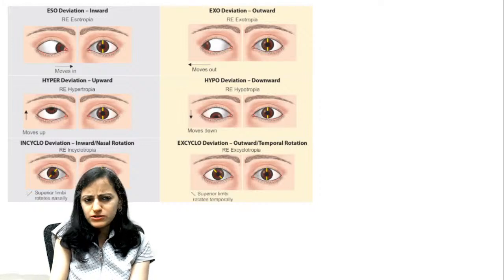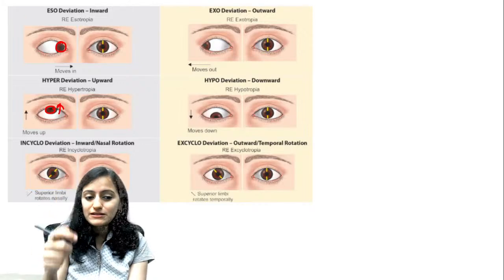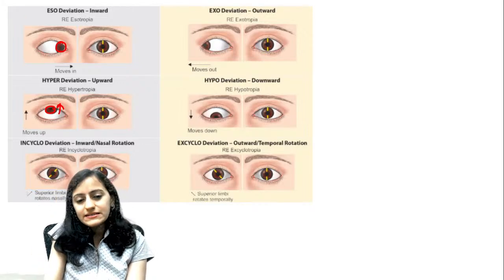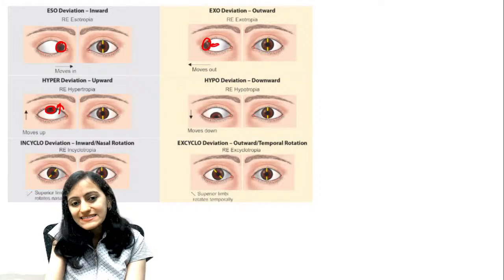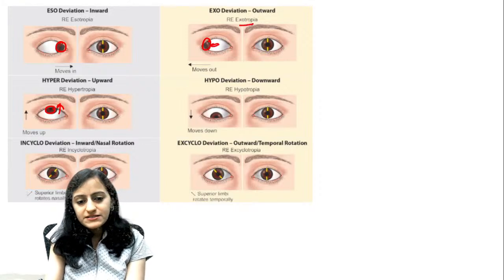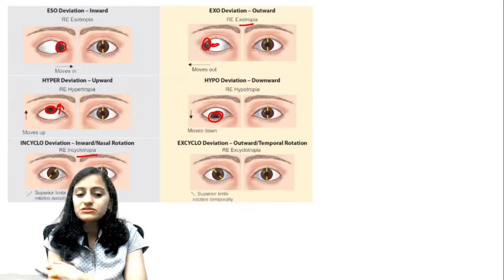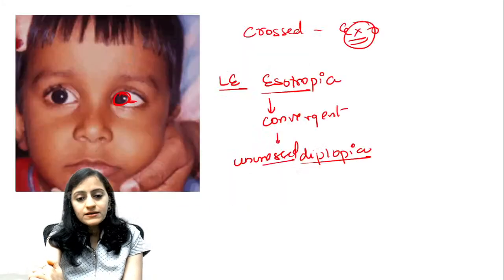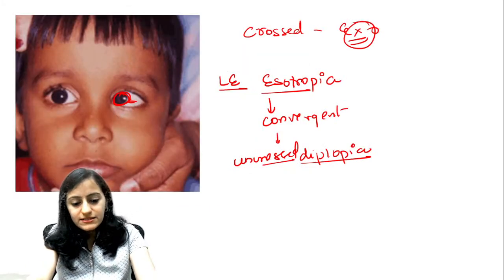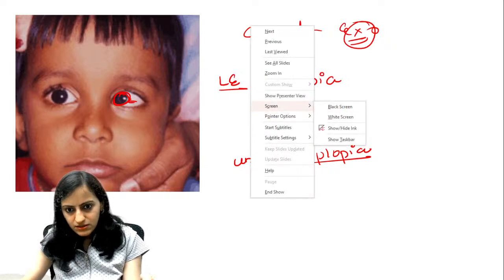Other types: right esotropia, right hypertropia (hyper = going up), right exotropia, right hypotropia. Cyclo deviation is due to the oblique muscles.